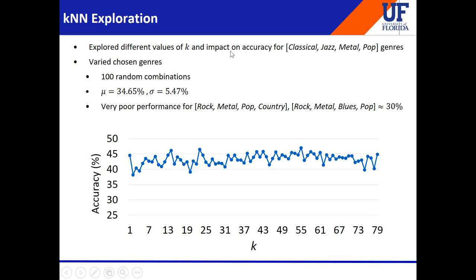We also tried 100 different random combinations of four genres — for example, rock, metal, pop, and country. When we did this, the accuracy went down. The mean accuracy across these 100 random combinations was 34.65% with a standard deviation of 5.47. We noticed that for combinations like rock, metal, blues, and pop, the classifier routinely confused certain genres such as rock and blues — which is also confusing to a human listener, so these results are more or less expected.